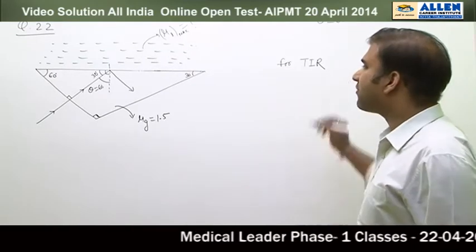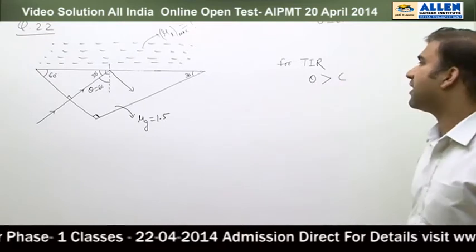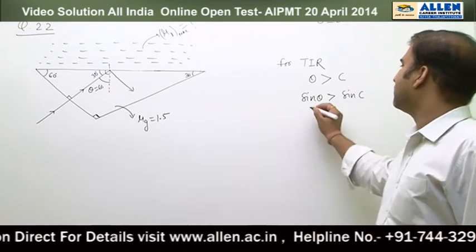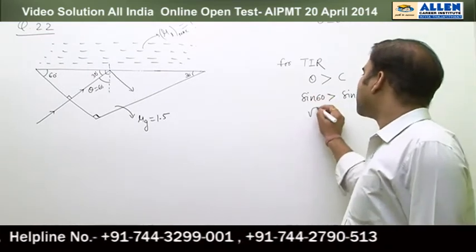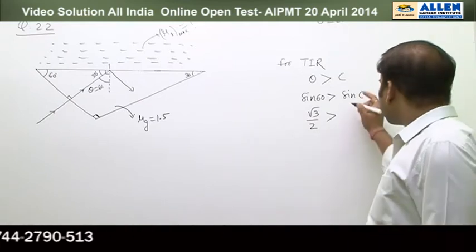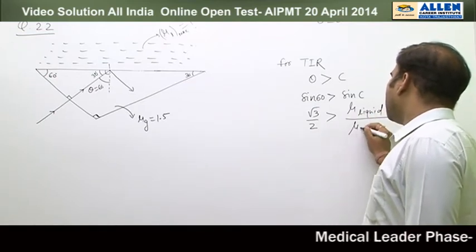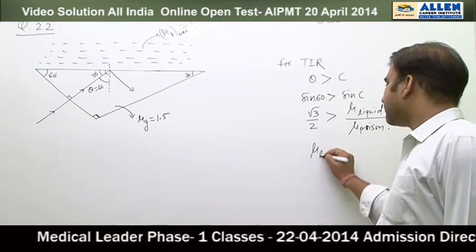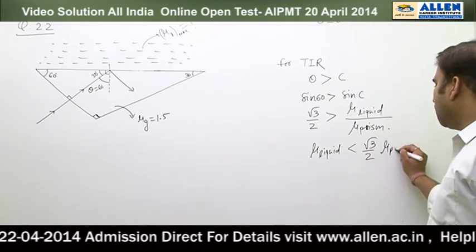For total internal reflection, theta must be greater than the critical angle, so sin(theta) must be greater than sin(c). Theta is 60 degrees, so sin 60 must be greater than the critical angle. Sin 60 is √3/2, and it must be greater than the critical angle. The critical angle sin(c) is given by μ_liquid divided by μ_prism.